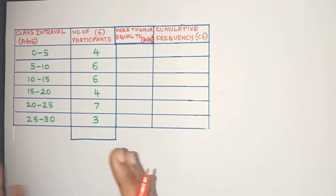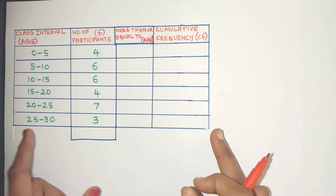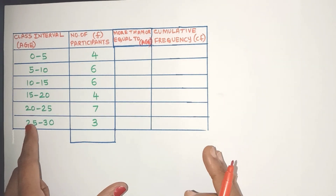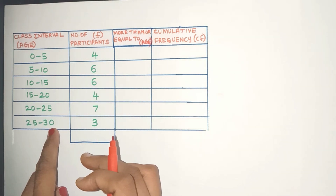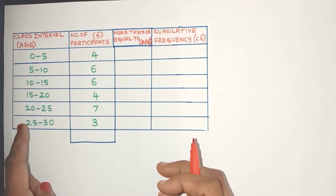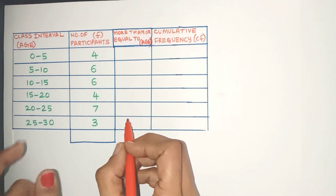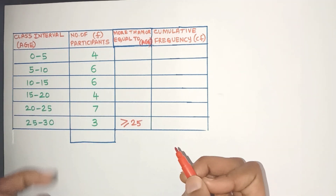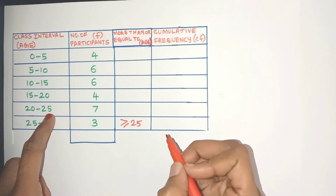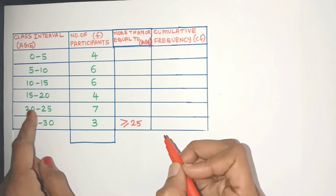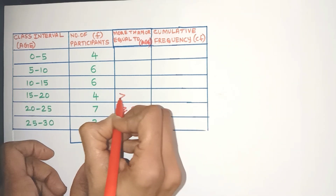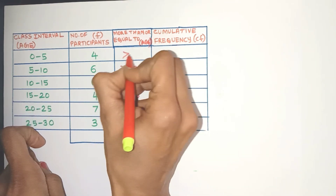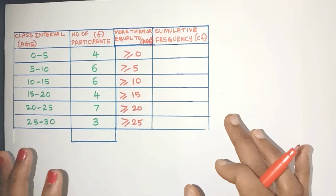Now let's see the greater than type. Here is the same data. For greater than type, let's start with the last row because that is more logical. Now we have 25 to 30. Because this is an exclusive class interval, the lower limit value is always included in that class interval. So 25 to 30 means ages starting from 25 and less than 30, so we can surely say it is greater than or equal to 25 — equal to because the lower limit is always included. Similarly, 20 to 25 means all ages starting from 20, so greater than or equal to 20. You just need to write greater than or equal to and put the lower limit value. So let's fill up all the rows — we have one column already. Now let's come to the CF part.